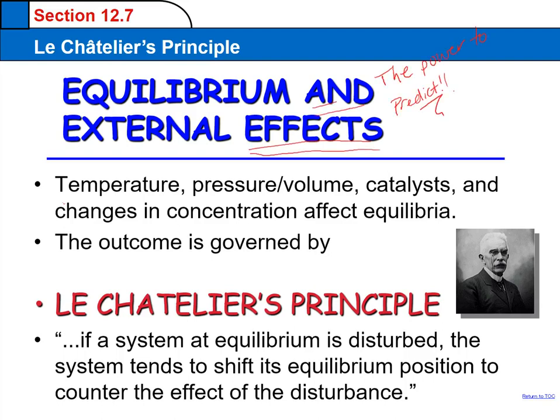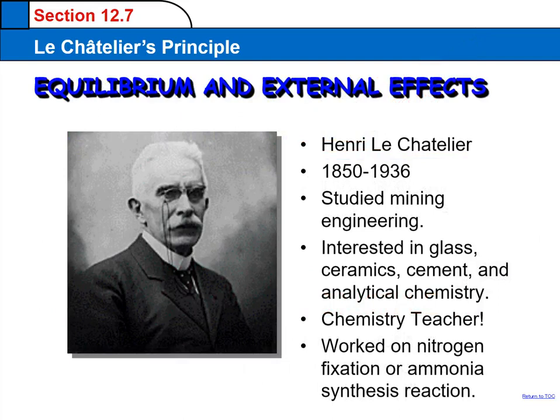What do you mean by that? Well, this means you can predict what's going to happen if you make some changes to a chemical reaction that's at equilibrium. This is very powerful. Now, Henri Le Châtelier lived from 1850 to 1936. More of an engineer, but basically a chemist as well, and taught chemistry. He worked on important things like glass and ceramics and analytical chemistry, and also on the important process of fixing nitrogen.